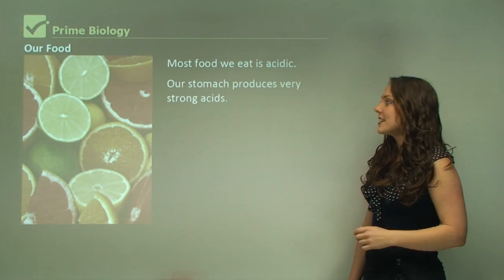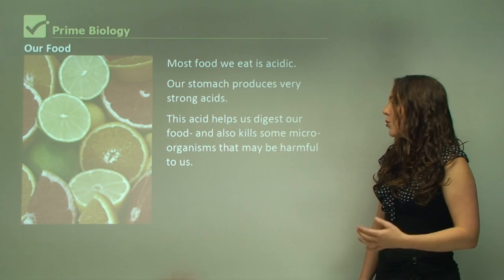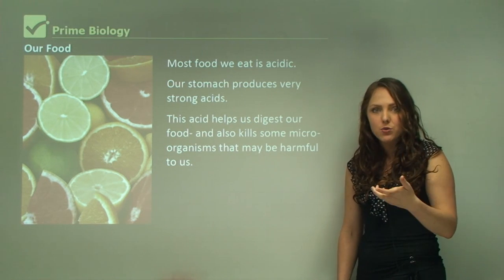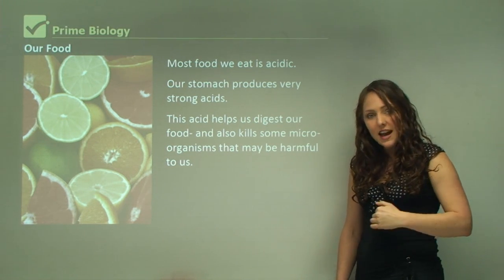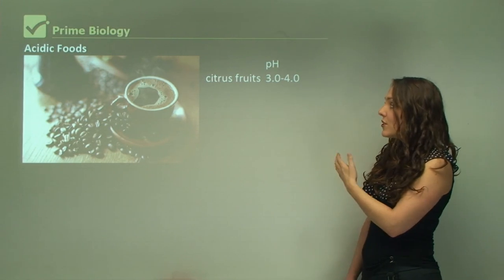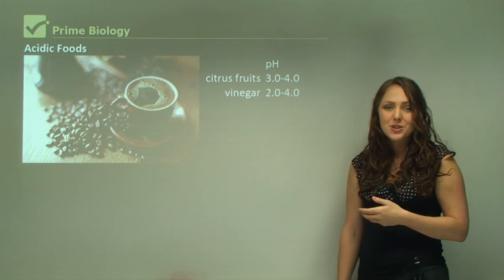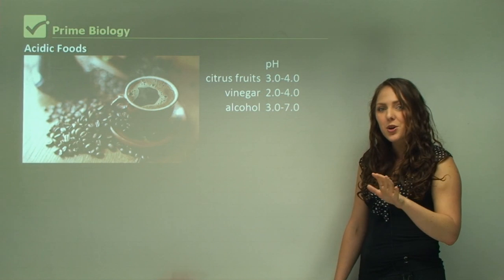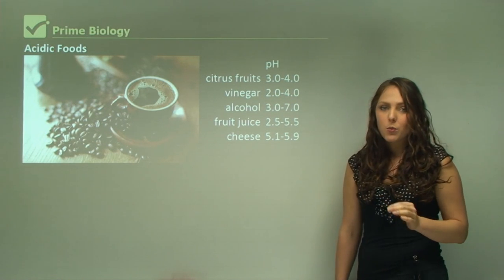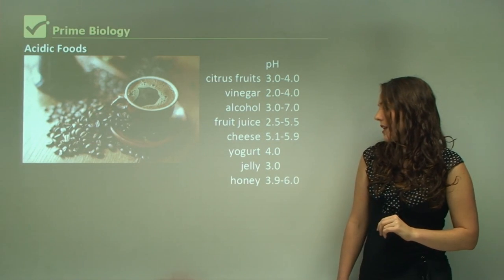Most of the food that we eat is acidic. Our stomach produces very strong acids anyway so it does not harm us. This acid helps us digest our food and also kills some microorganisms that may be harmful to us. If we do ingest food that has some bad microbes, the stomach acid kills them before it can go through our system. Acidic foods: citrus fruits have pH 3 to 4, vinegar is pH 2 to 4, alcohol is pH 3 to 7 depending on what you consume, fruit juice is between 2.5 and 3.5.